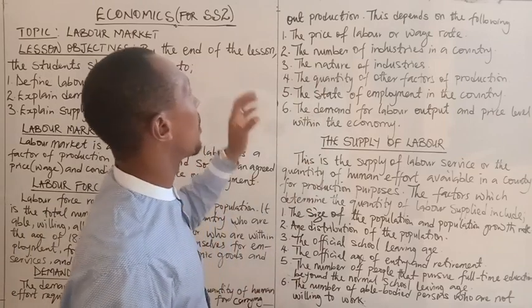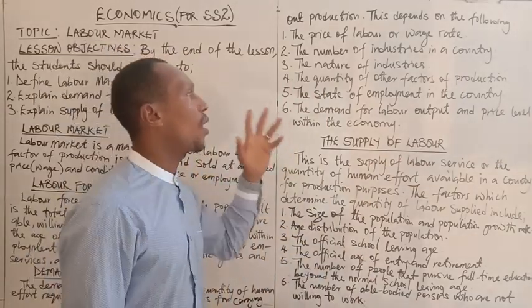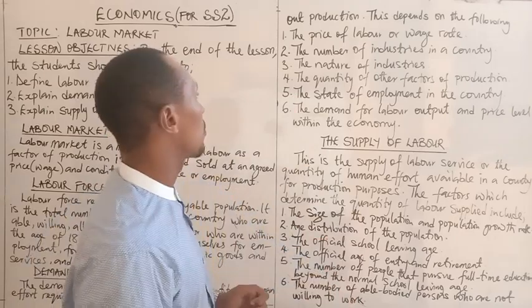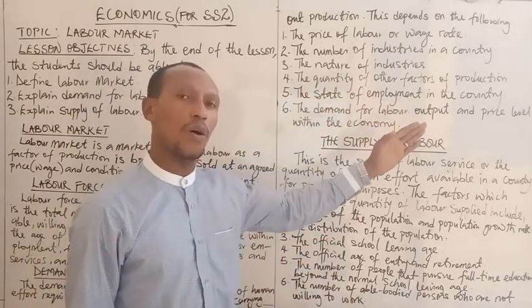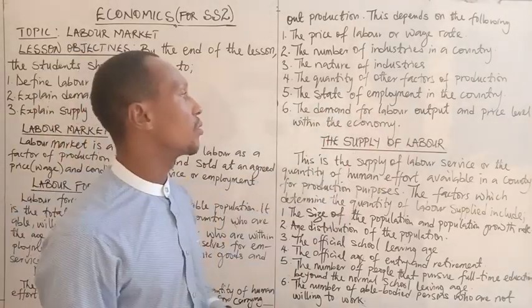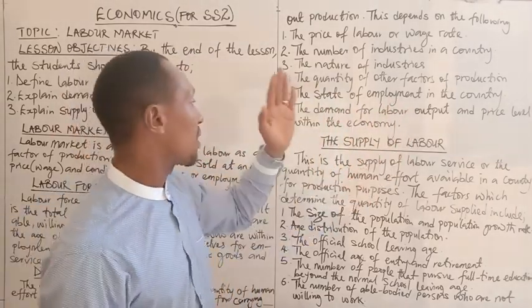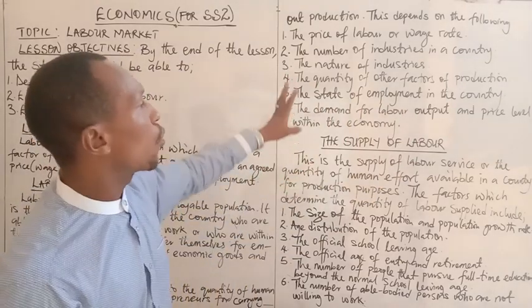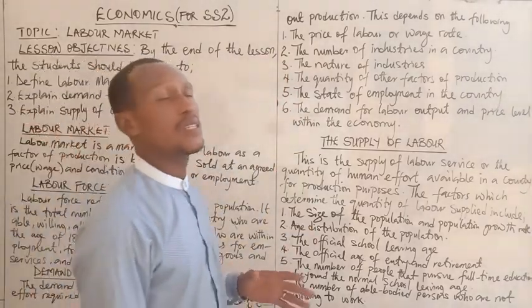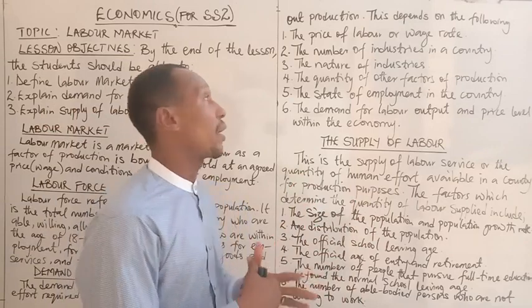The factors that determine demand for labor are: one, the price of labor or wage rates; two, the number of industries in a country; three, the nature of industries; four, the quantity of other factors of production; five, the state of employment in the country; and six, the demand for labor output and price level within the economy. These are the factors that determine the quantity of labor an entrepreneur can get or will need to carry out production.